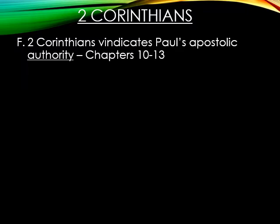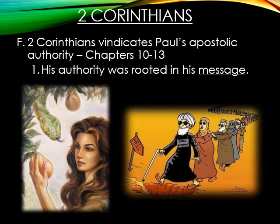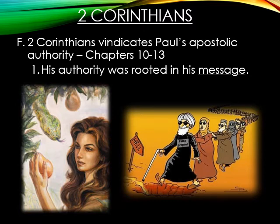Letter F: 2 Corinthians vindicates Paul's apostolic authority. Number one: Paul's authority was rooted in his message. Paul worried that this church might be tricked with false doctrine as Eve was tricked by the serpent. So he admonishes them not to accept another gospel that he did not preach, since he was one of the chief apostles. He goes on to say that even if a false prophet's doctrine looked good — as Satan looks good himself, transforming into an angel of light, as do his demons — Paul says they should still hold fast to his word.